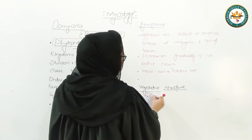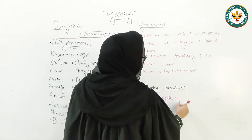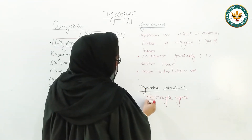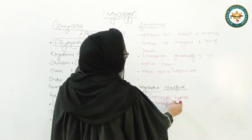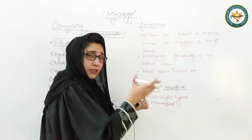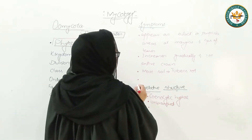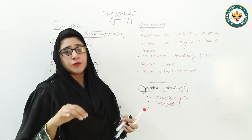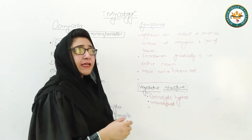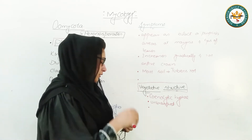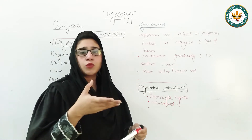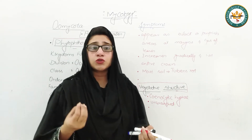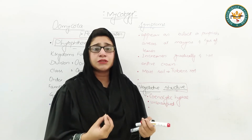If we talk about its vegetative structure, you have coenocytic hyphae. As we all know, these are hyphae which have no septum formation, meaning they are aseptate hyphae. They are coenocytic, unbranched hyphae. If there is a branching pattern, it is irregular branching. If we talk about the internal structure, you have all the organelles present in any eukaryotic cell. The cell wall is made of glucan and chitin.